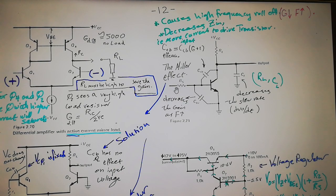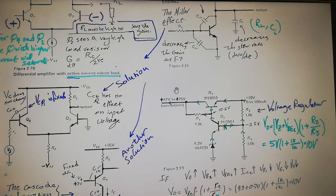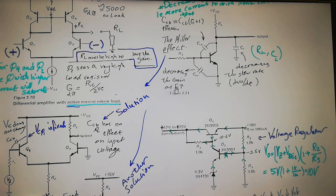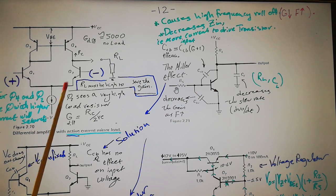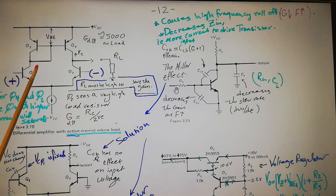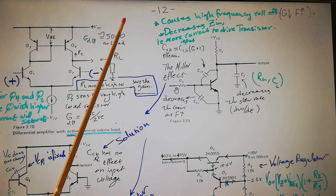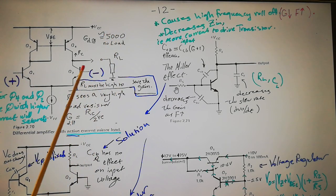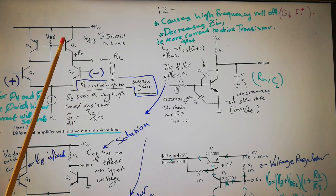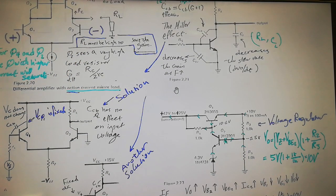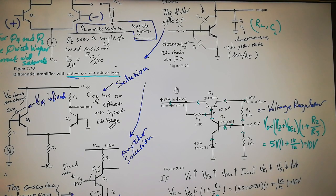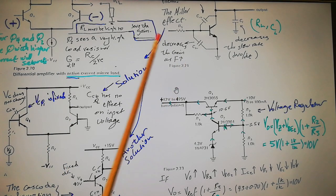Going back to the differential amplifier, we find the solution for it. Let me talk a little more about the merits of this differential stage. The merits are that you can have very high gain, and at the same time the inputs — when properly selected with the associated circuit — can swing all the way up and all the way down. And now we add another merit: getting rid of the Miller effect.